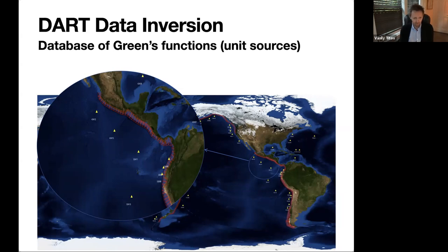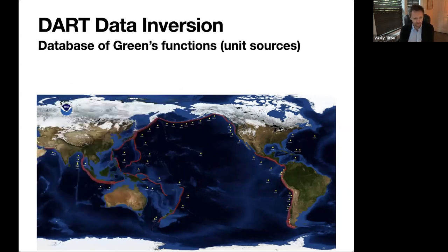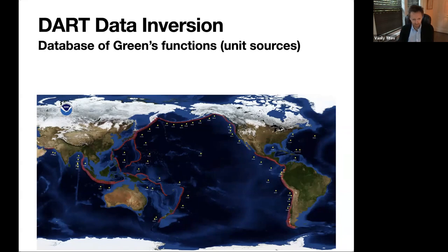You combine and scale those unit sources using the DART data — the yellow triangles show the modern constellation of DART stations, with almost all of them now in place. Then you can determine the tsunami source fairly quickly. The reason DART data is so useful is that tsunami waves propagate very fast in deep water, so in most cases the DART data receives the tsunami before it hits land anywhere.